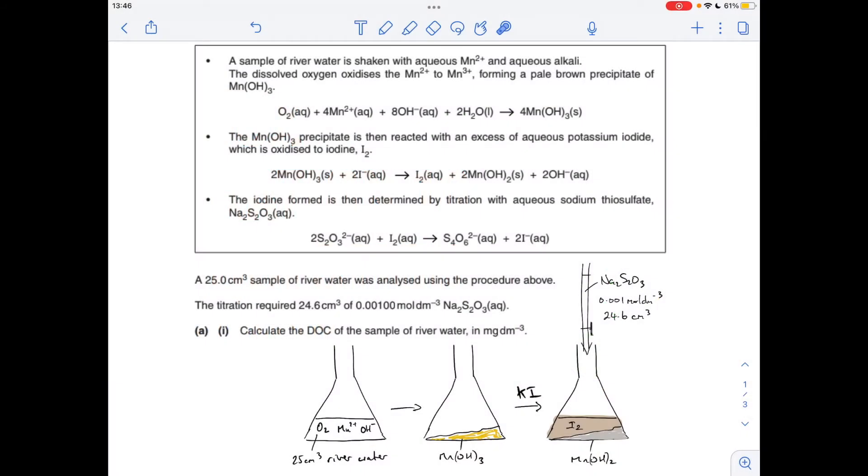Okay, so I'll make a start. I've done, as usual, a little diagram there to try and visualize all this information. So I'll just quickly talk through that, and then we'll go through the calculation. So they've taken 25 cm³ sample of river water, that's got dissolved oxygen in it, and they've shaken it with aqueous Mn²⁺ ions and alkali, hydroxide ions. That's generated this yellow precipitate, or pale brown precipitate, of Mn(OH)₃.